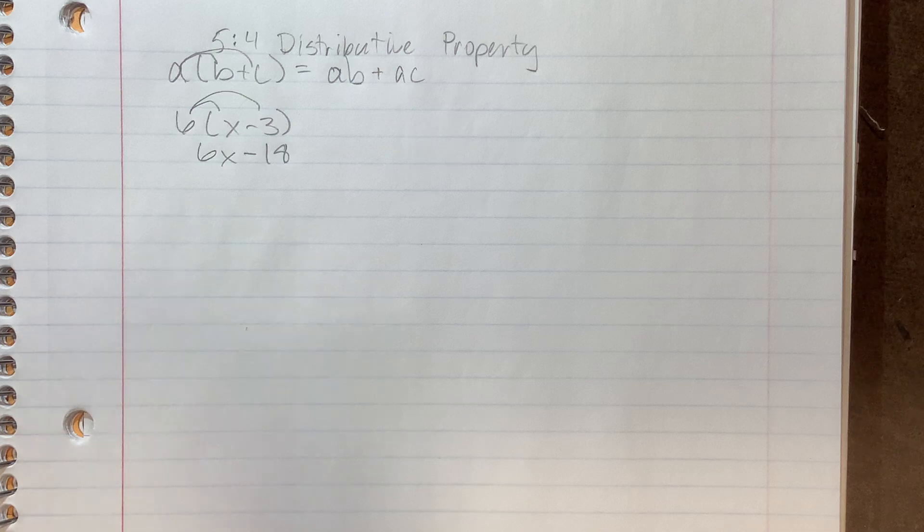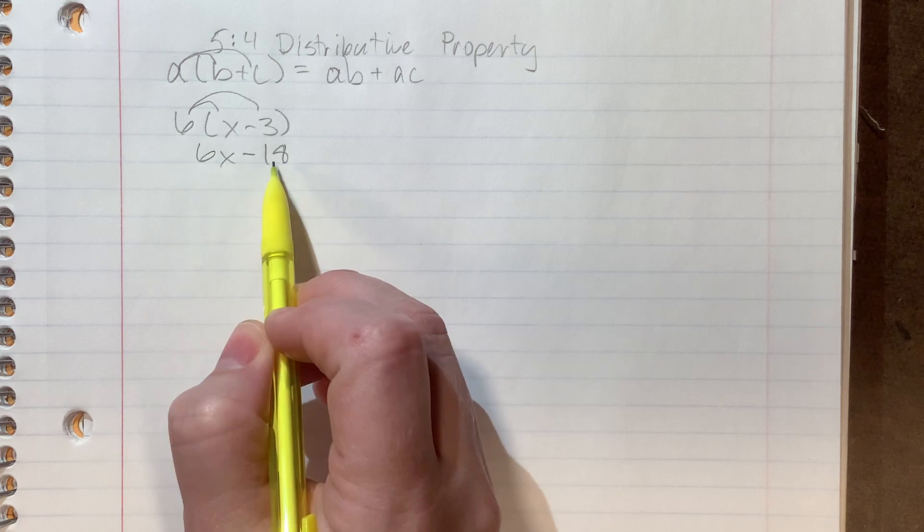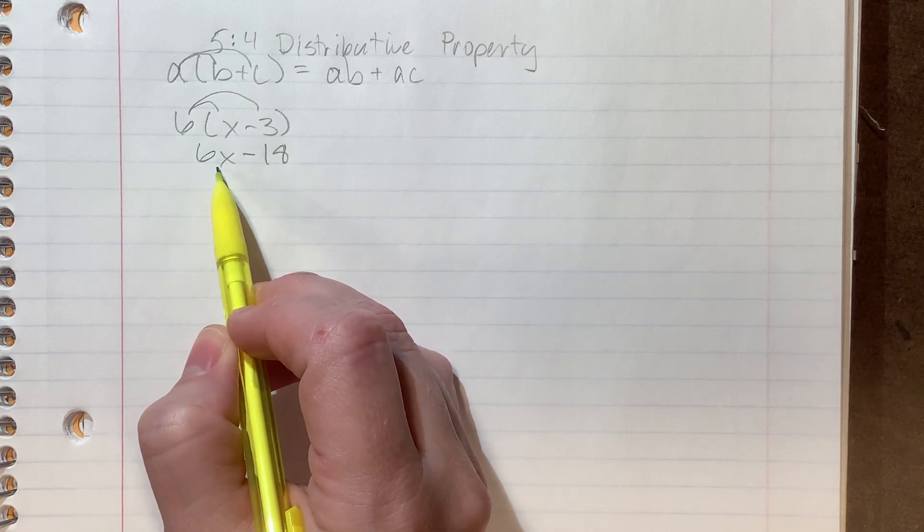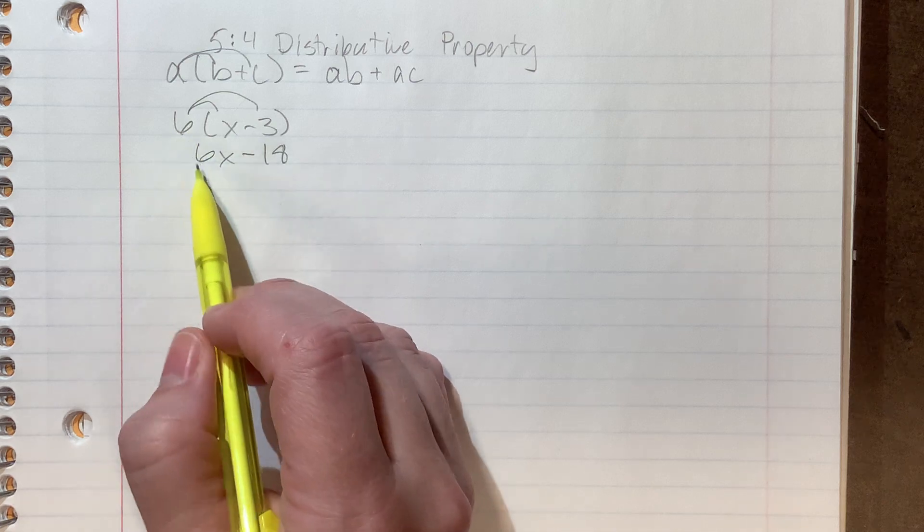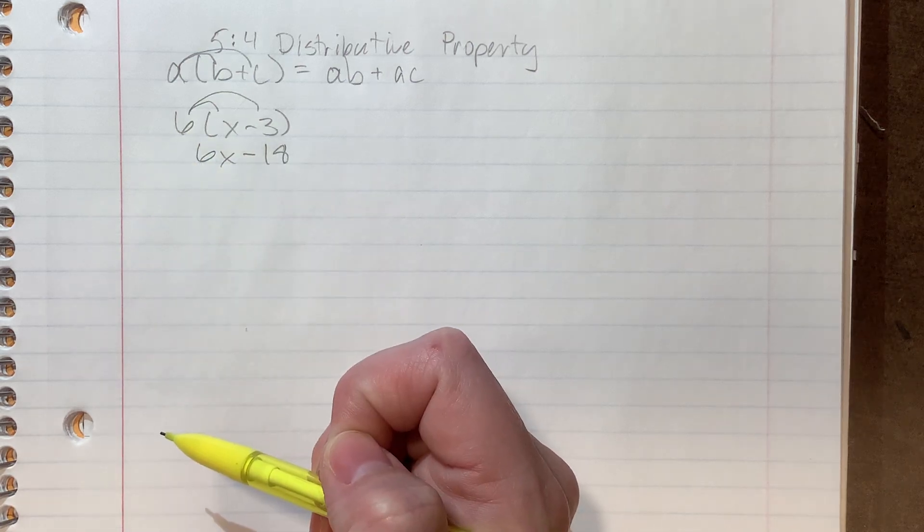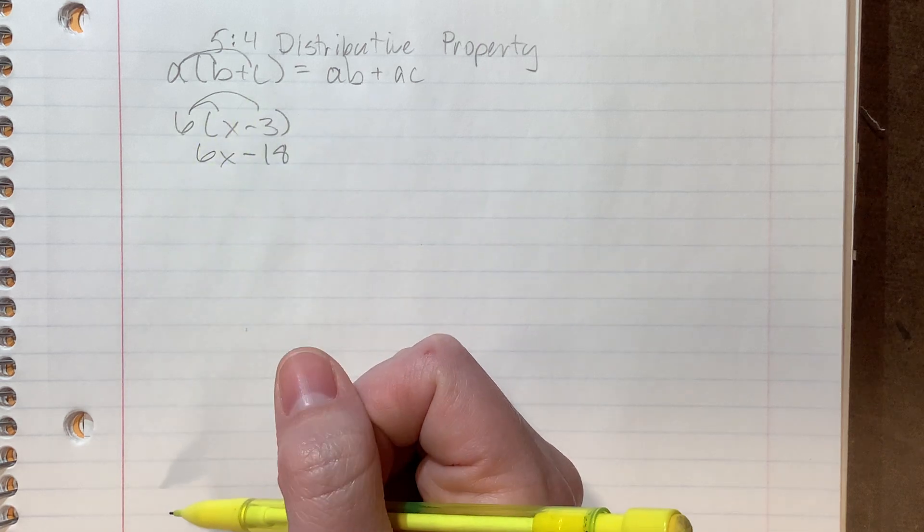Now, eventually we're going to learn how to go backwards as well so we can look at these two numbers. Notice that they have a common factor of 6 and actually pull the 6 out. So eventually you're going to have to get good at going both directions. But for now, that's what that looks like.